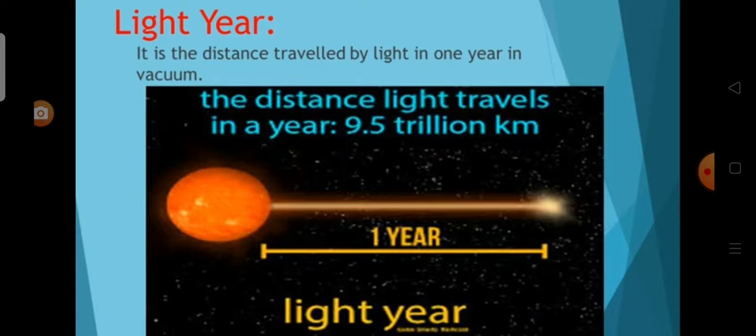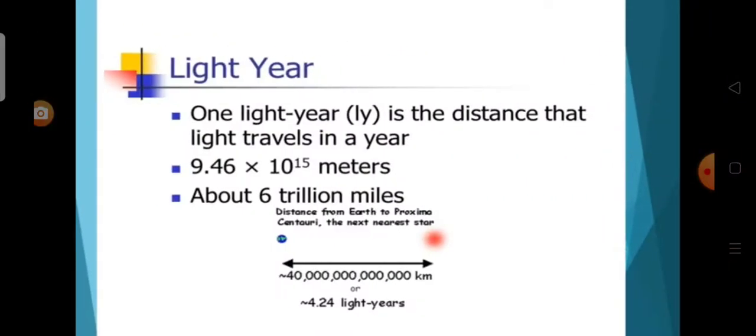The next one is light year. Light year is the distance travelled by light in one year in vacuum. One light year is equal to 9.46 × 10¹⁵ metres, that is about 6 trillion miles.